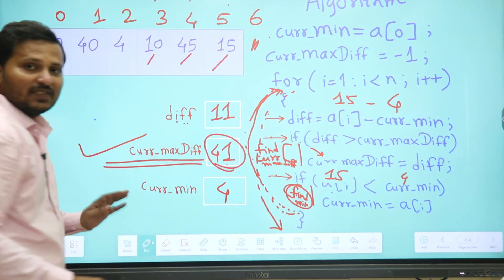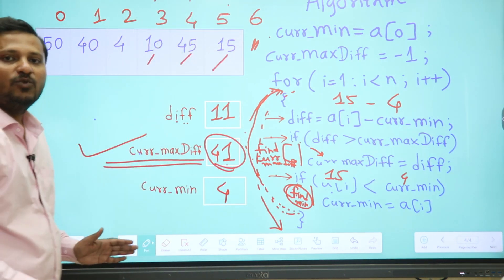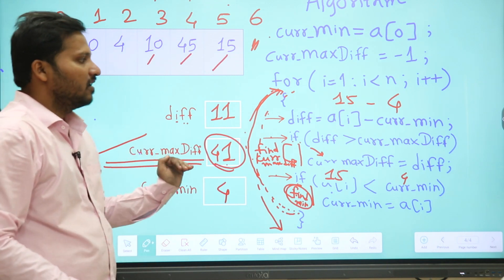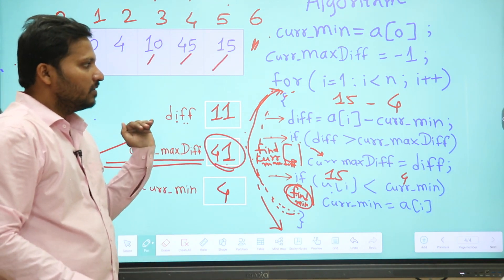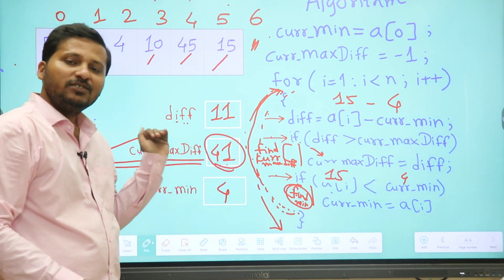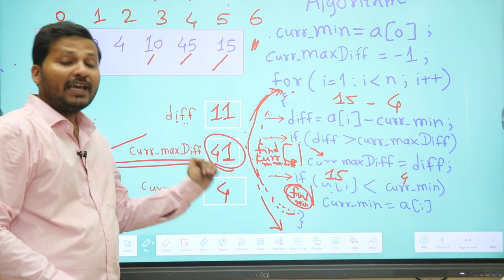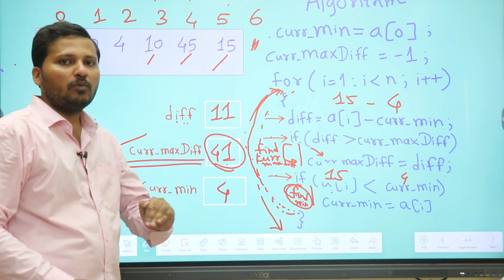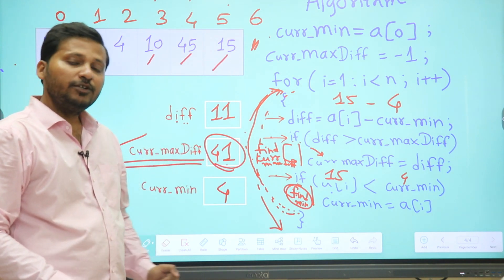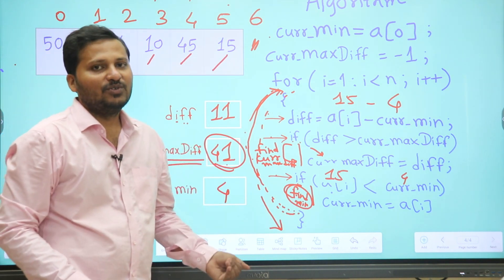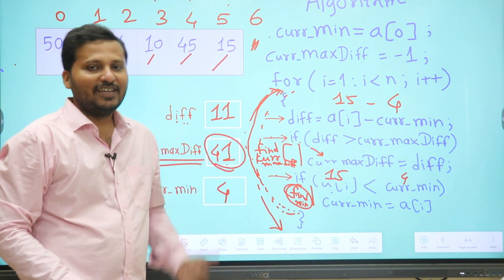This is how we find the maximum difference in an array. This same logic is used for the stock buy and sell problem, which we will see in the next video.